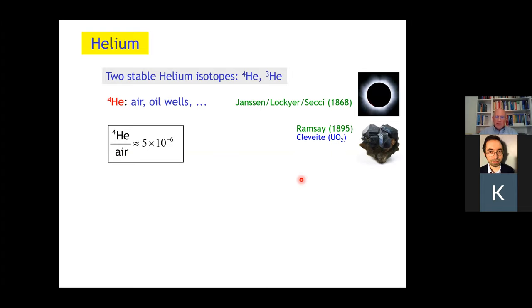There are two stable helium isotopes, helium-4 and helium-3. Helium-4 is part of the air we breathe, but only at a fraction of 5 ppm. It occurs in higher concentration in oil wells because of natural radioactivity, alpha decay, but it was discovered not on earth, but indirectly during a solar eclipse. Scientists concluded it was an element that occurs on sun and they called it helium. Only almost 30 years later, Lord Ramsey extracted minute amounts of helium-4 from cleveite, that is a uranium oxide.